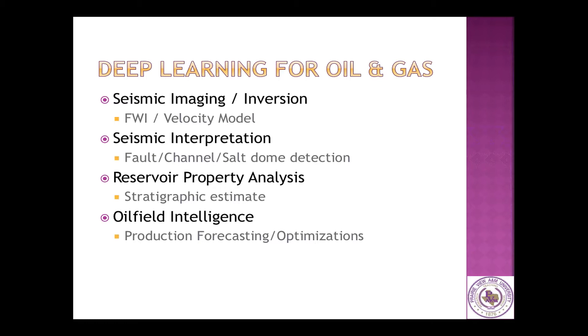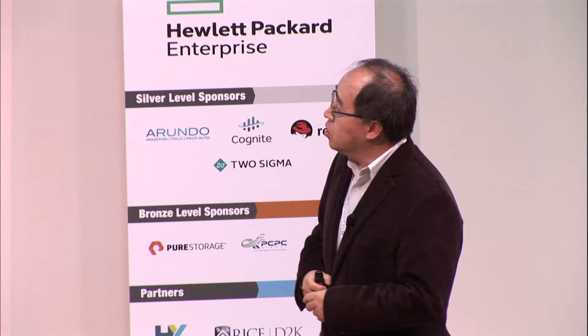There are things we'd like to do here, such as how we can apply FWI algorithms. Another obvious application is interpretation, like the previous talk. Our previous work has also focused on the interpretation part, mostly using image recognition and image classification algorithms from deep neural networks to detect geological features like faults and channels. Many companies have already put this into production.